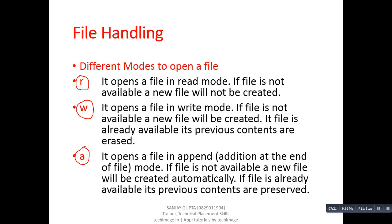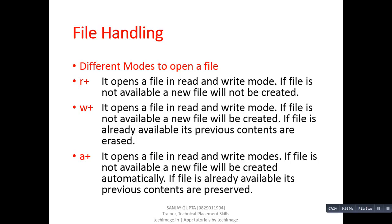There are another three modes available. First is R+ mode — it opens a file in read and write modes; if the file is not available a new file will not be created, so R+ can be considered an extension of R mode. Similarly, W+ mode is the extension of W mode — it opens a file in read and write modes; if the file is not available a new file will be created, but if it already exists its previous contents are erased. Last is A+ mode — it opens a file in read and write modes; if the file is not available a new file will be created, and if the file already exists its previous contents are preserved.